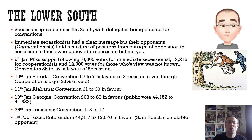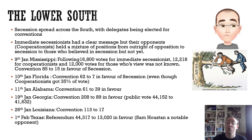Their opponents were known as cooperationists. They had a mixture of positions, from outright opposition to secession — Sam Houston in Texas being a good example — to others who believed secession was the right move but just didn't think this was the right time. They wanted to give Lincoln a chance, noting the guy wasn't even in office yet, and pointing out that Democrats still had control of Congress, so Lincoln would be hamstrung anyway.